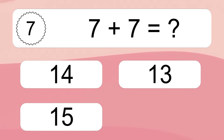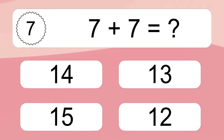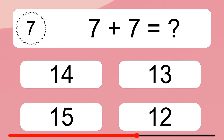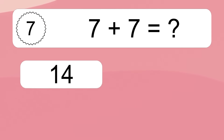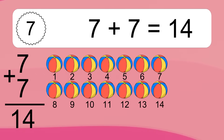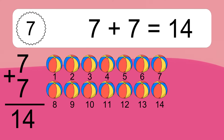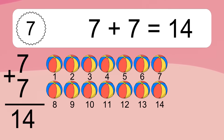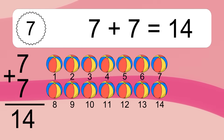7 plus 7 equals what? 7 plus 7 equals 14. Let's count it: 1, 2, 3, 4, 5, 6, 7, 8, 9, 10, 11, 12, 13, 14.